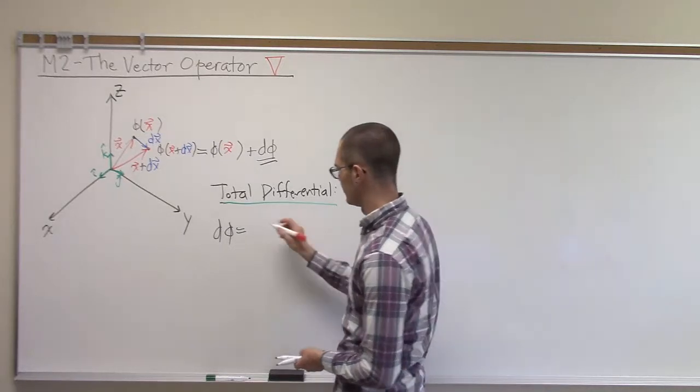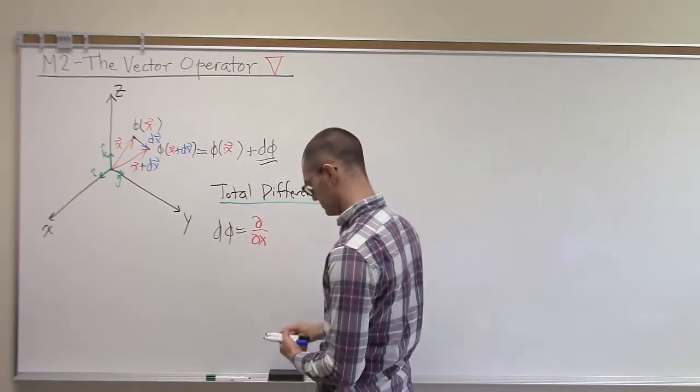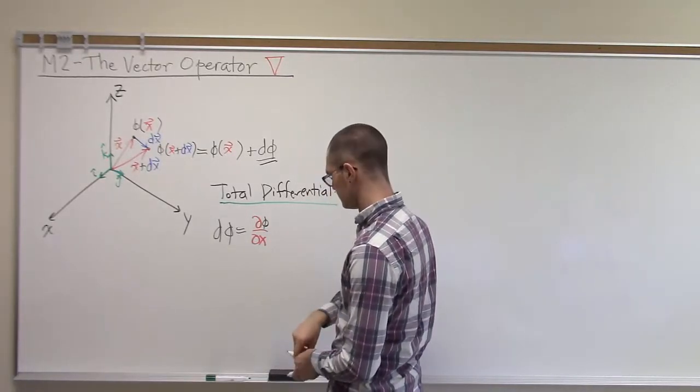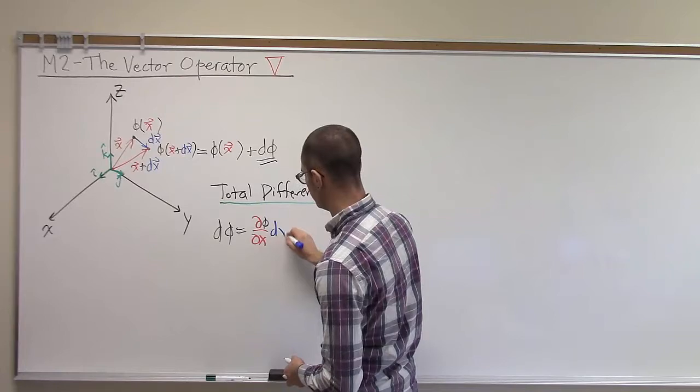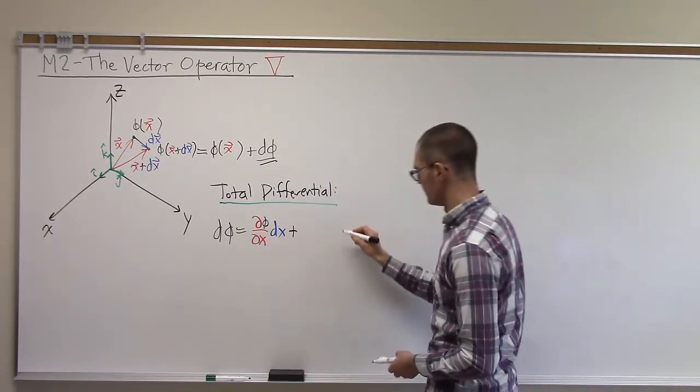So we can write that out as d phi by dx times dx. There are going to be three of these terms.